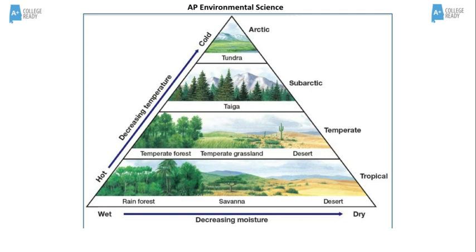Forests are located on the left side, deserts are located on the right side, and grasslands are in the middle range of precipitation.